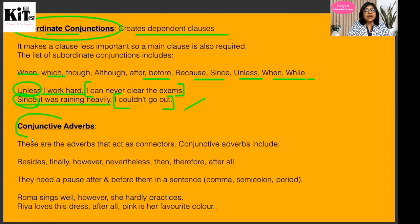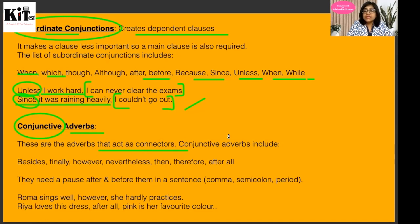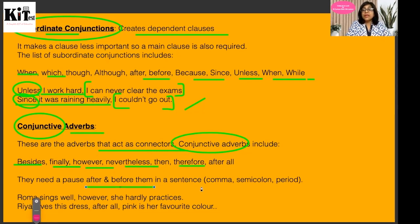The last category is conjunctive adverbs. These are basically adverbs — you know what adverbs are — but they do the work of conjunctions, which is why they are placed in the conjunctions category. These are adverbs that act as connectors. Conjunctive adverbs include words like: besides, finally, however, nevertheless, then, therefore, after all. They need a pause before and after them in the sentence.